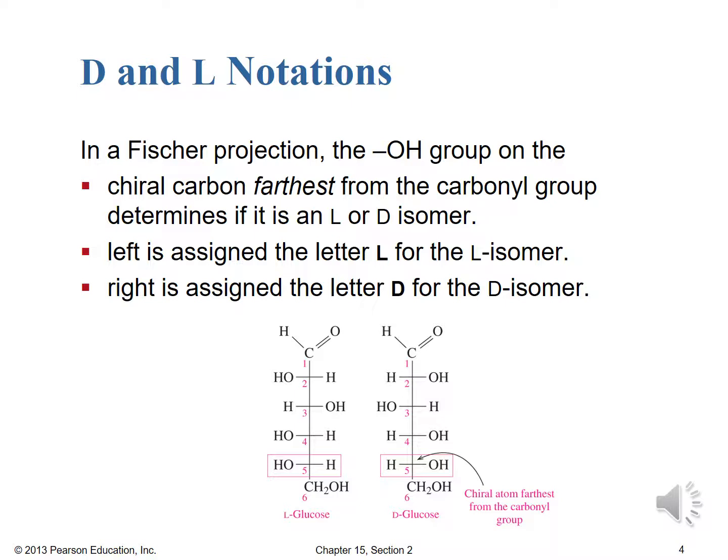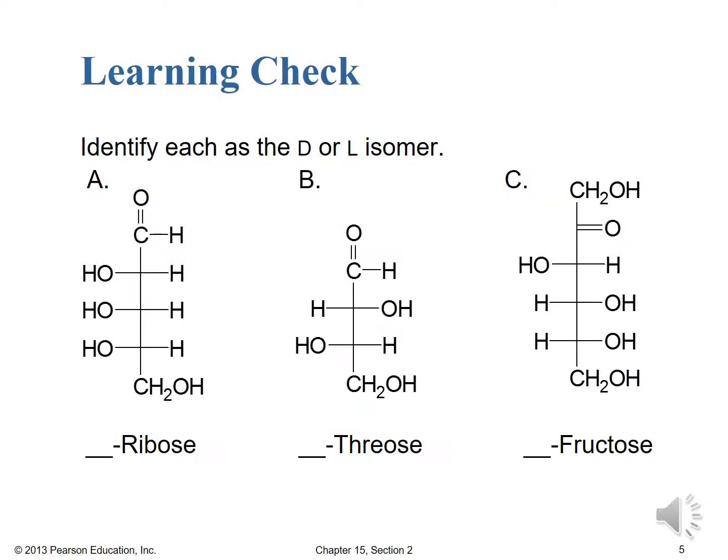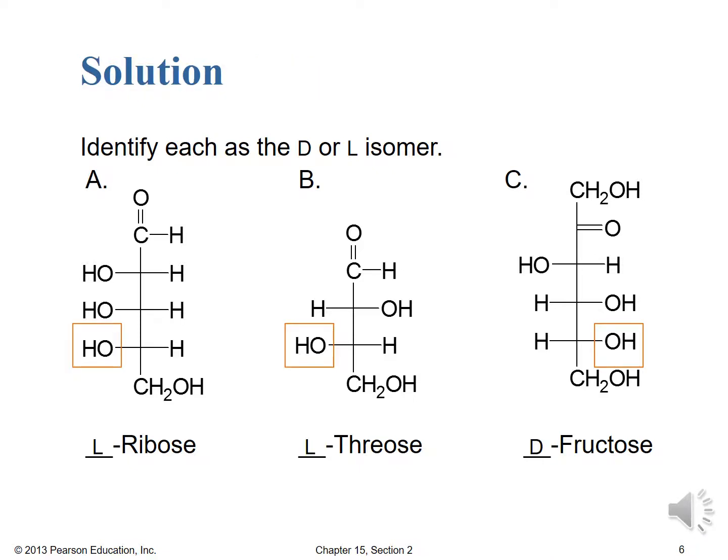Before we go further, let's pause for a learning check. You're asked to identify each structure as the D or L isomer. Make sure you're able to follow Fischer projections and see how useful they are in determining L and D isomers. Stop the video here, assign L or D to structures A, B, and C based on the Fischer projection, then start back up when you're ready to check your work.